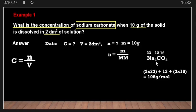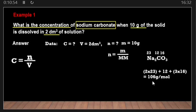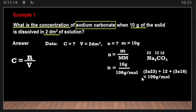Calculating the molar mass of Na₂CO₃: we have 2 atoms of sodium × 23, plus 1 carbon × 12, plus 3 atoms of oxygen × 16. When we evaluate this — (2×23) + 12 + (3×16) — our answer is 106 grams per mole. So the molar mass of sodium carbonate is 106 g/mol, which we substitute into the formula.